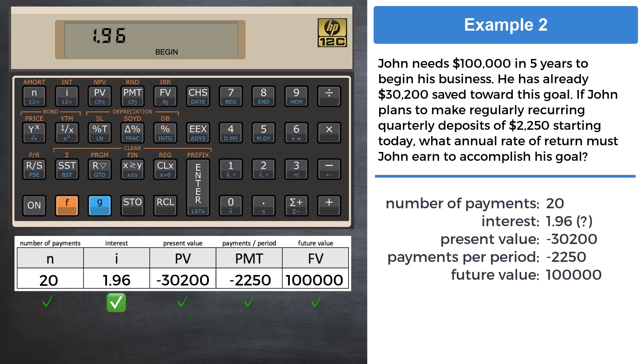Be wise to what this number means. It is the rate of return for a quarter of a year, and as you are expected to answer this with the annual rate of return, simply multiply this number in the display by 4. Press 4 and then multiply. 7.83 is 7.83% and the final answer to this question.